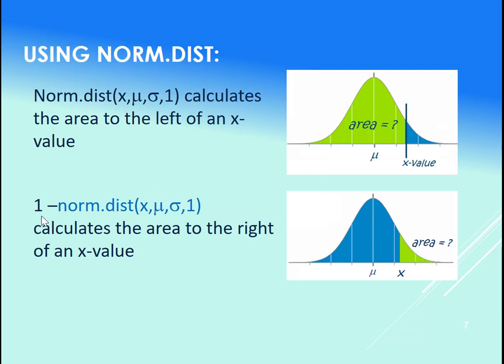And so if we want the area instead to the right, we do one minus that, or if you will, that's like taking a complement. So if ever we want the area to the right of an x-score, we go and do one minus the norm.dist.